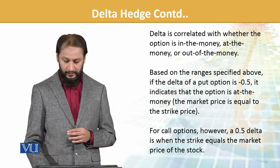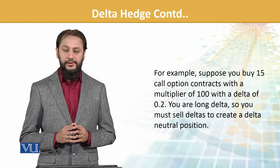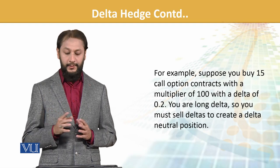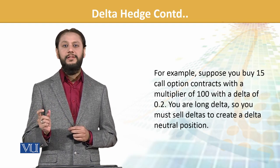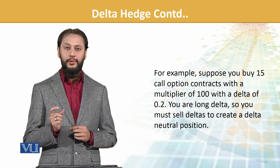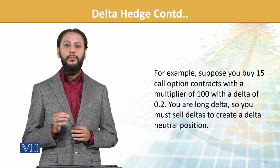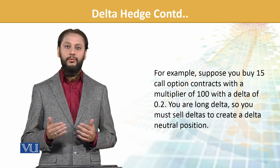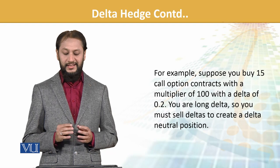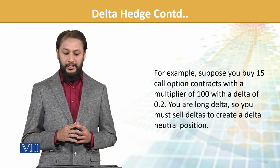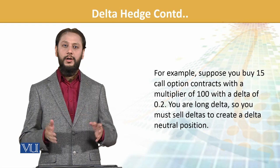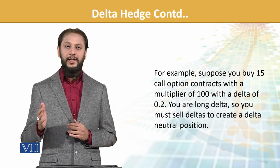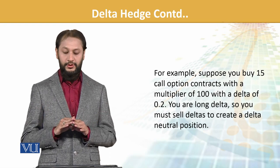For example, suppose you buy 15 call option contracts with a multiplier of 100, each has 500 components in it, with a delta of 0.2 positive — you are long on delta. You must sell delta to create a delta neutral position. By default, to get to a neutral position, we need to sell deltas to capture it.